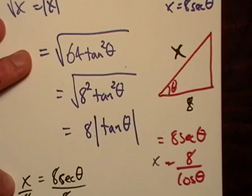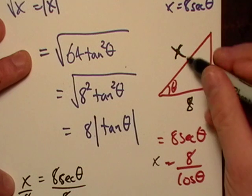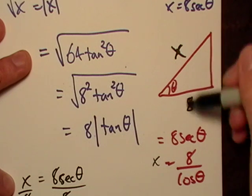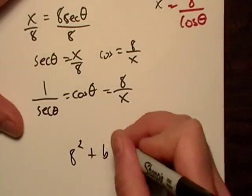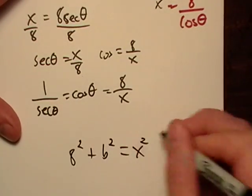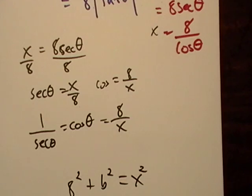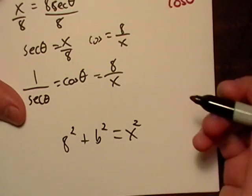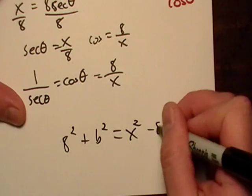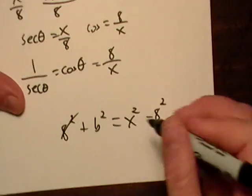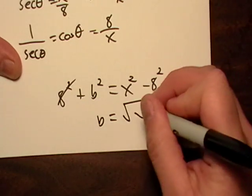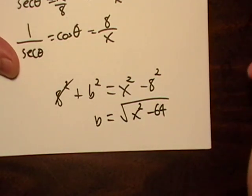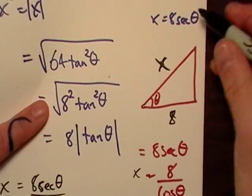Cosine of theta is 8 over x, and I have tangent of theta. So what I'm going to have to do is I'm going to have to do the Pythagorean theorem. I've got 8 squared plus b squared equals x squared. If I subtract 8 squared from both sides, I get b equals the square root of x squared minus 64. So this is what my other side is. This side over here ends up being x squared minus 64 under the radical.